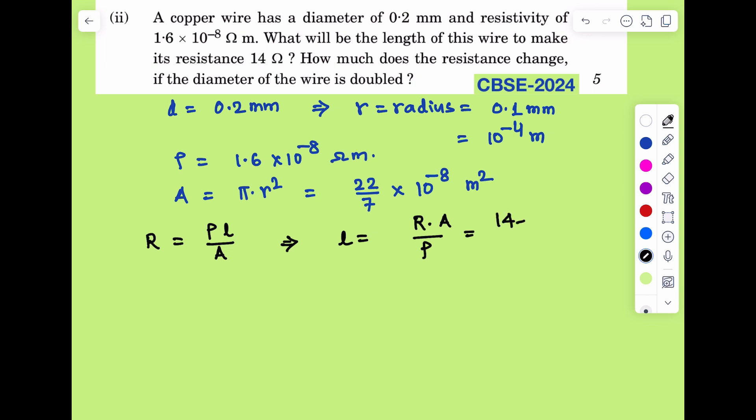Here R is given as 14 ohm, the resistance is given as 14 ohm, into area cross section is 22 by 7 into 10 to the power minus 8 meter square, divided by rho is given as 1.6 into 10 to the power minus 8 ohm into meter.